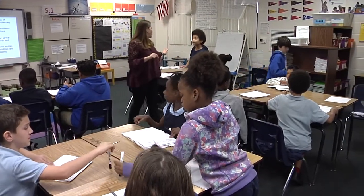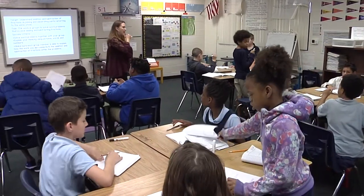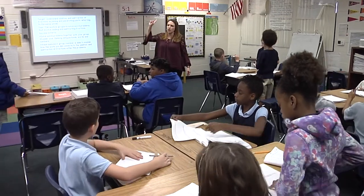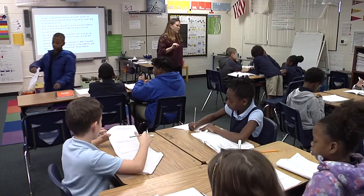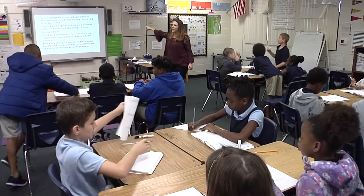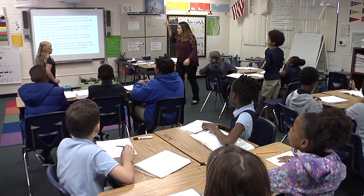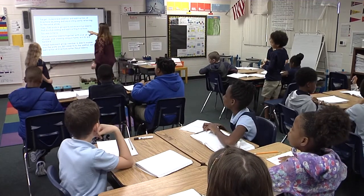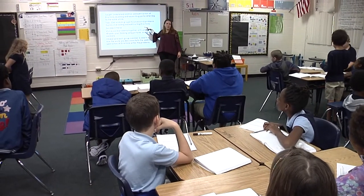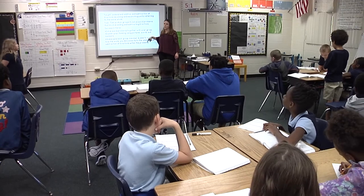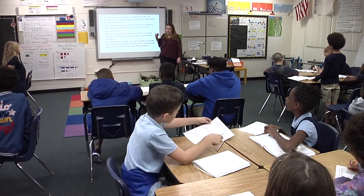One group ready. Two groups ready. Three groups ready. Four groups ready — everybody's group is now ready. You start with number one. If you get stuck, stop, freeze, put your eyes on me. Your success criteria tells you what you need to do to achieve this target today. Understand? Okay, off you go.